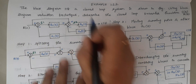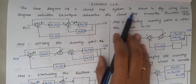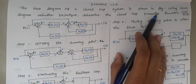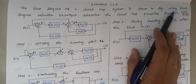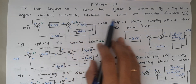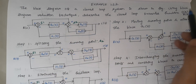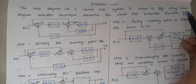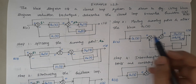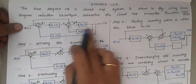The problem is: the block diagram of a closed loop system is shown in the figure. Using block diagram reduction technique, determine the closed loop transfer function C(S) by R(S), where C(S) is the output and R(S) is the input. This is our given block diagram.